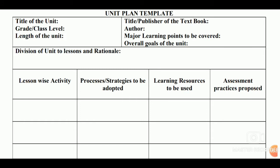For example, we are talking about a chapter like reproduction in flowering plants. When we write the title of the unit, we will write 'Reproduction in Flowering Plants', then grade or class — it is from class 7. Then for the length of the unit, we will write the number of pages the chapter has, maybe 5, 7, or 8 pages, or whatever it is.